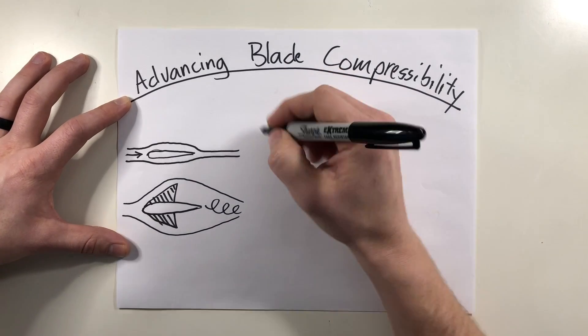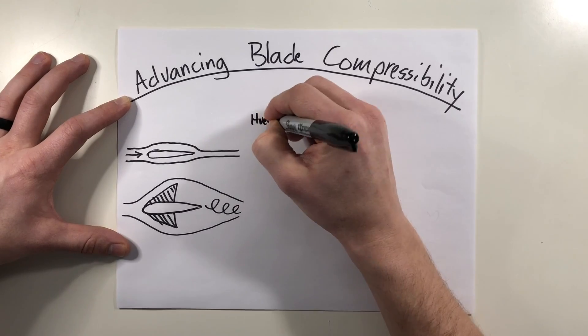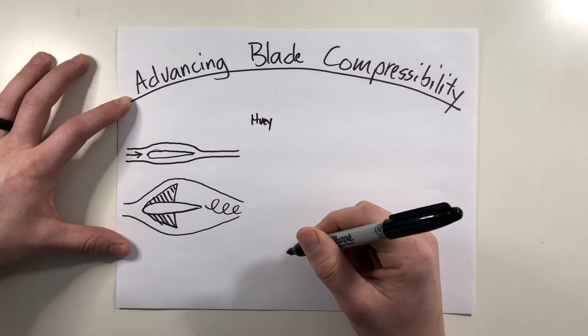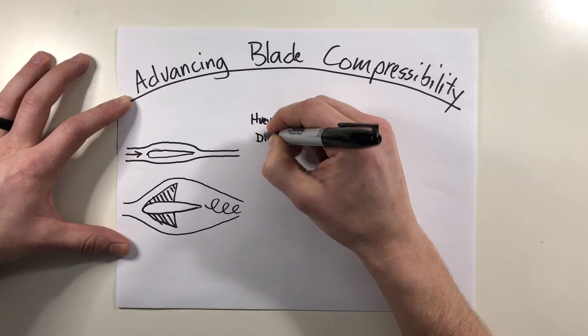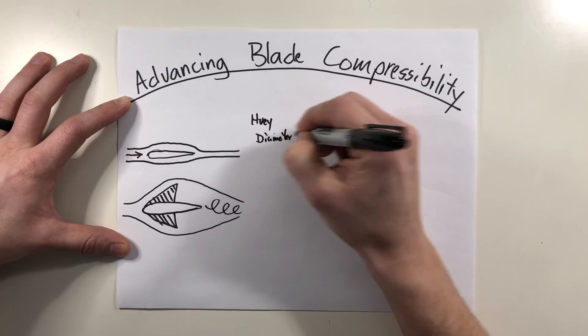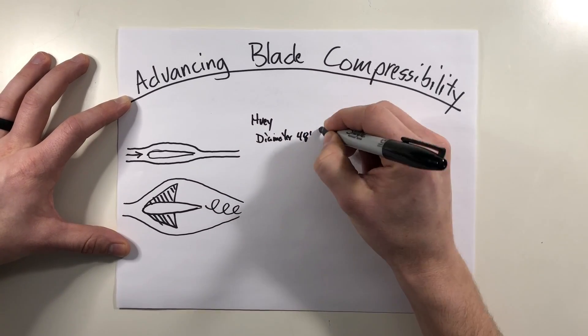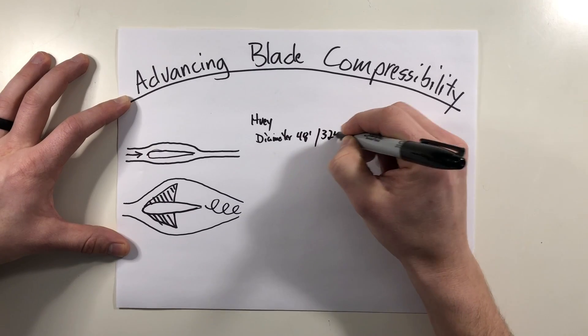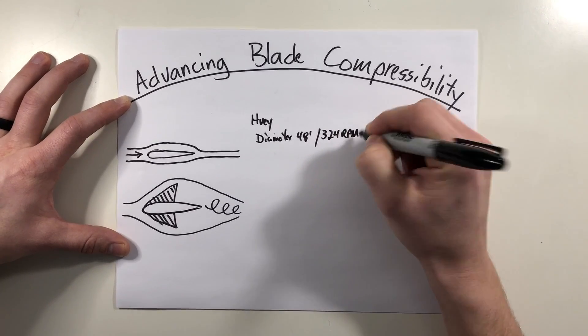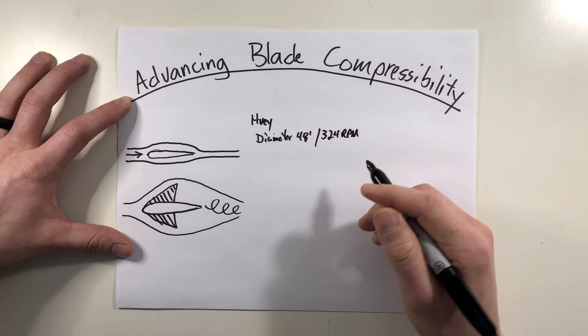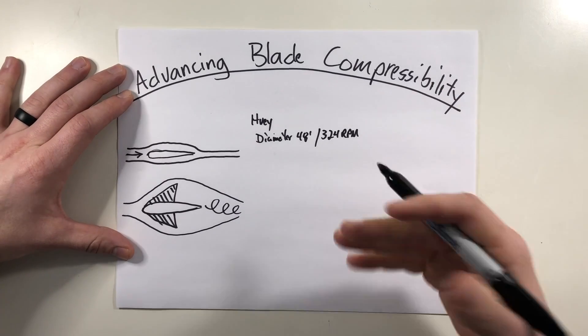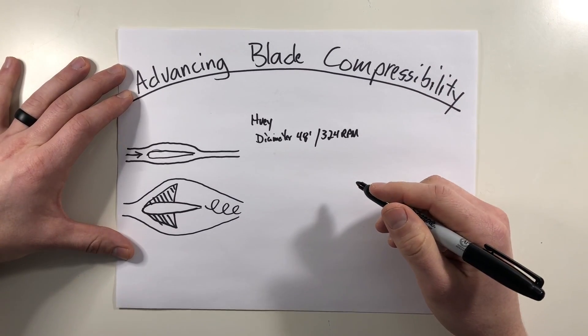So let's take a basic helicopter, one that everybody is pretty familiar with, we'll take a Huey. So basic rotor diameter is 48 feet, and it spins at 324 rounds per minute. So we'll have to get into a little bit of the math here, but I'll just demonstrate how it's done so that you can then calculate it for your helicopter.